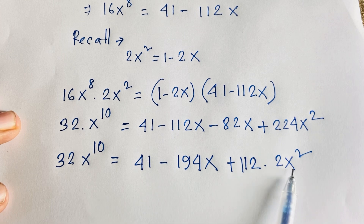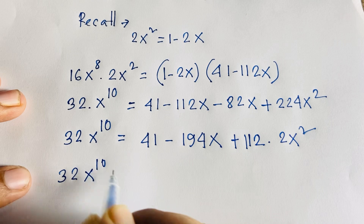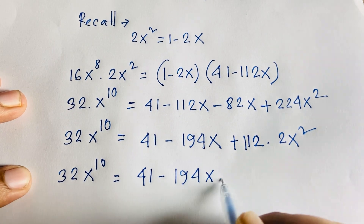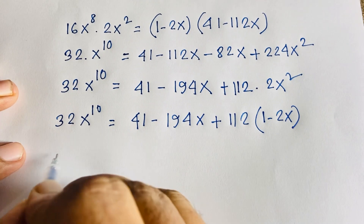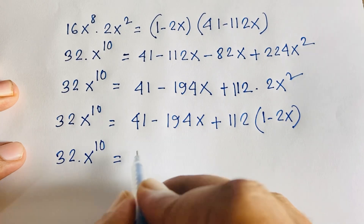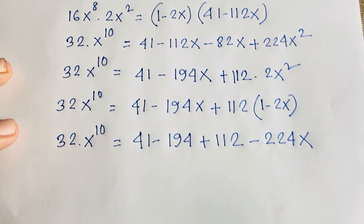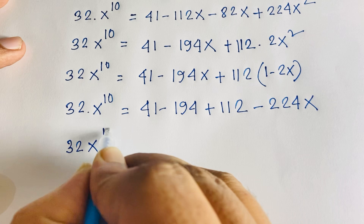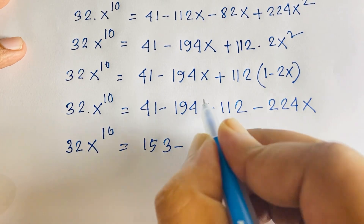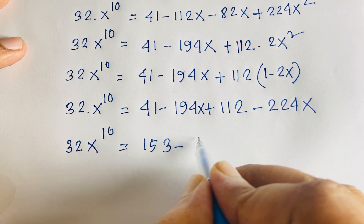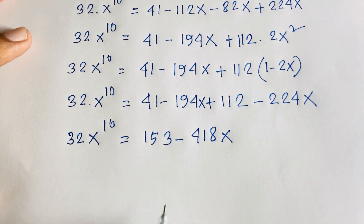Since 2x² = 1 minus 2x, we have 224x² = 112 times 2x² = 112(1 minus 2x) = 112 minus 224x. Substituting: 32x^10 = 41 minus 194x plus 112 minus 224x, which simplifies to 32x^10 = 153 minus 418x.